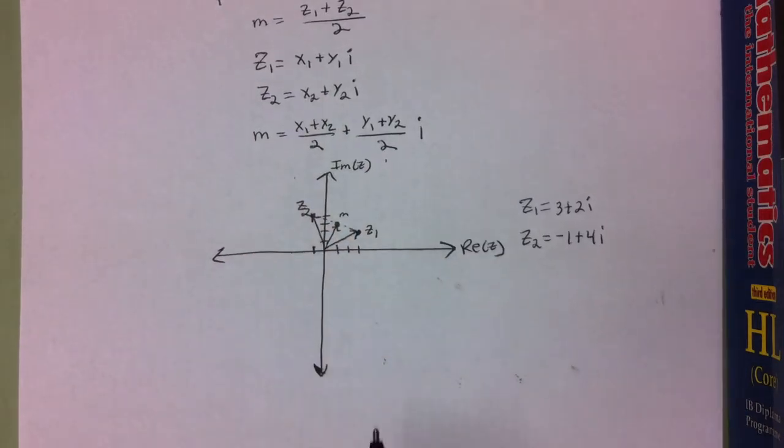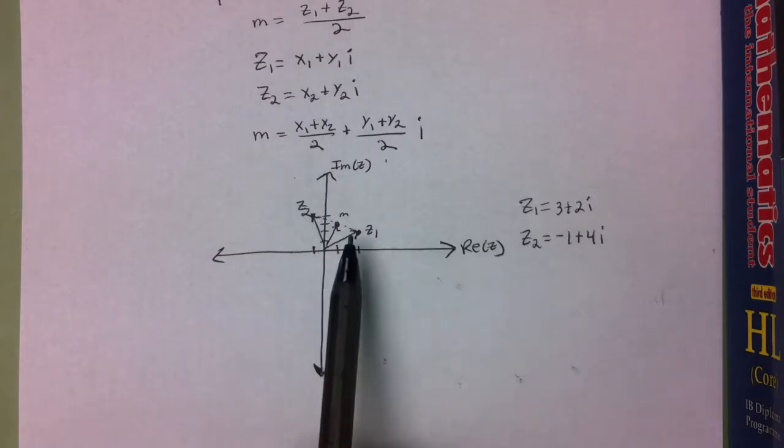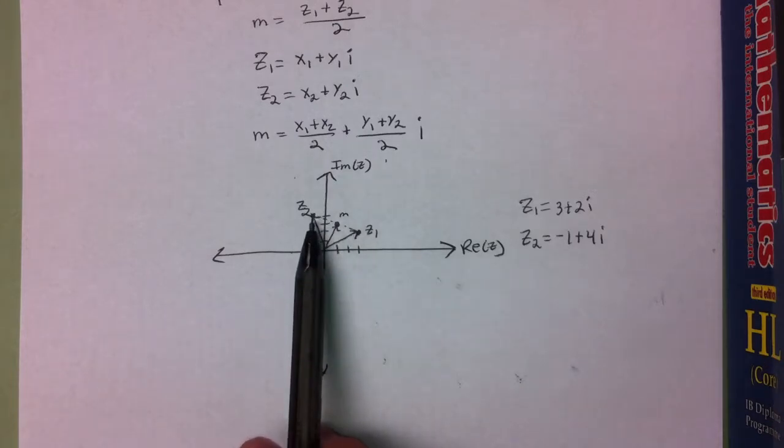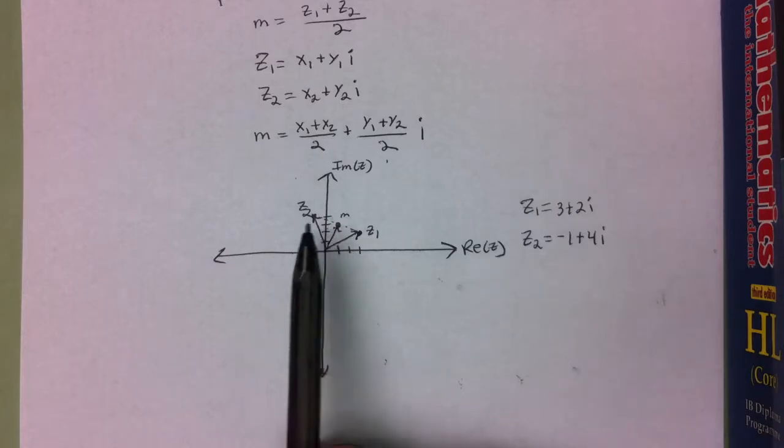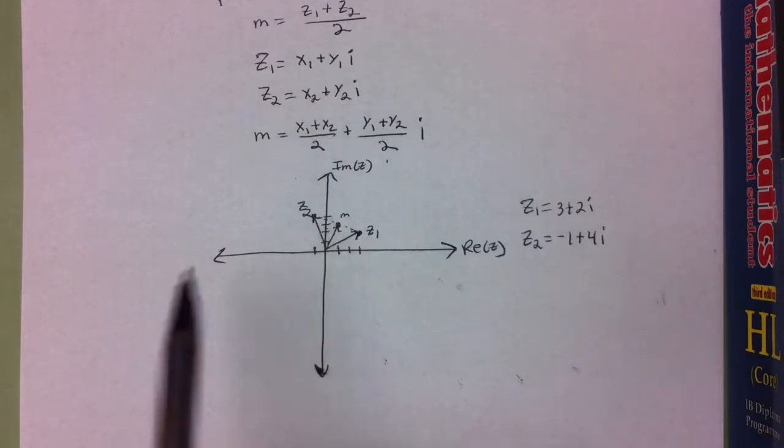In this example problem, I've picked two complex numbers. We can see that I've put z sub 1 and z sub 2 here on this Argand diagram and drawn a line between them. I've also drawn another complex number which is directly between them and is the midpoint of those two.